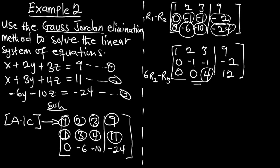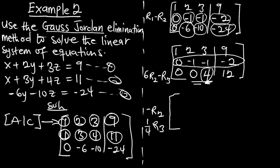I want to turn the pivot in row 2 to positive 1 and make everything positive. So on row 2 I apply negative 1 × R2, giving 0, 1, 1, 2. To turn the 4 in row 3 to 1, I apply (1/4) × R3, giving 0, 0, 1, 3. Row 1 is unchanged: 1, 2, 3, | 9.